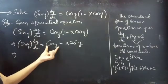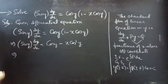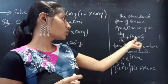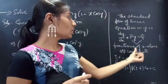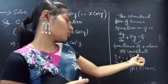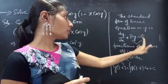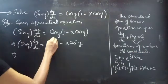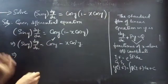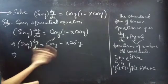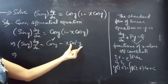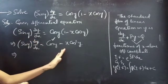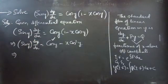Now let's take this term to the LHS. We know that the standard form of a linear equation is dy/dx + P·y = Q, where P and Q are either functions of x alone or constants. So the RHS part should be a function of x or a constant, not in y. So we'll take this to the LHS and then divide the whole equation by cos² y so that the y terms in the RHS will be eliminated.